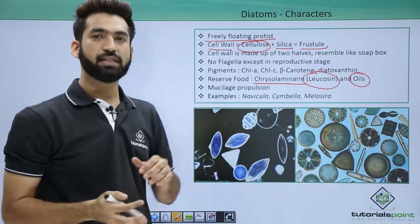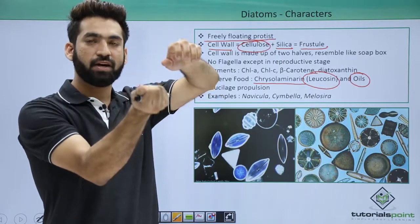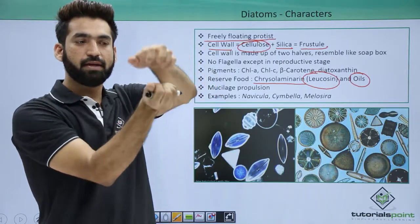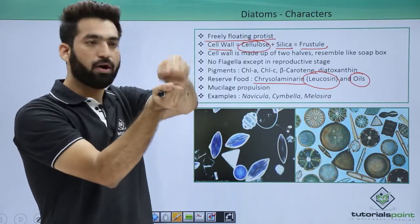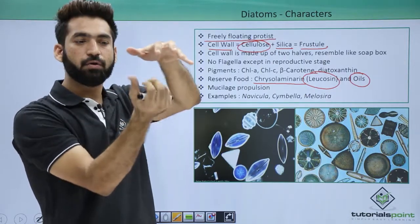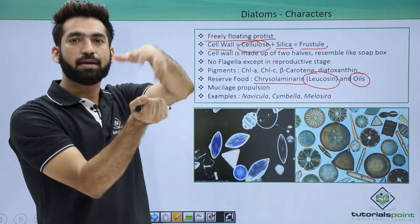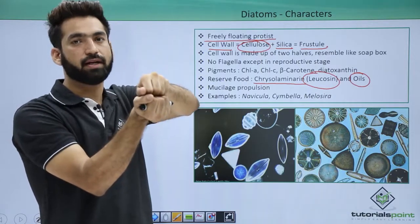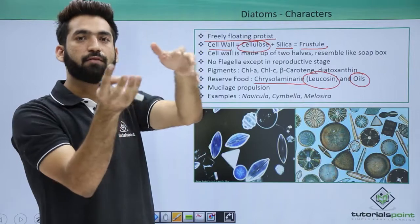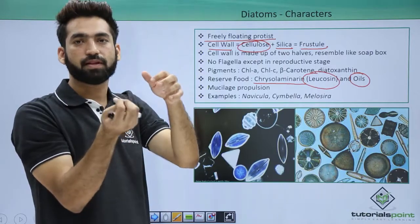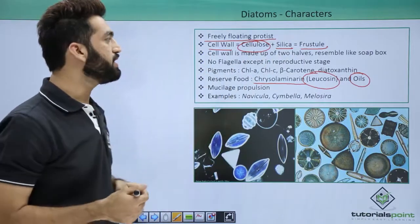The frustule is present in the form of a soap box — there is one half and another half. The body is like a soap box where you have the bottom part and the upper part. The bottom part is called hypotheca and the upper part is called epitheca. This has been asked in exams: the body of which protist looks like a soap box? The answer is diatoms.